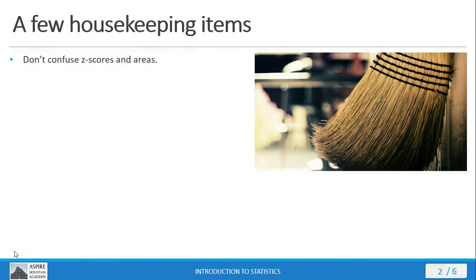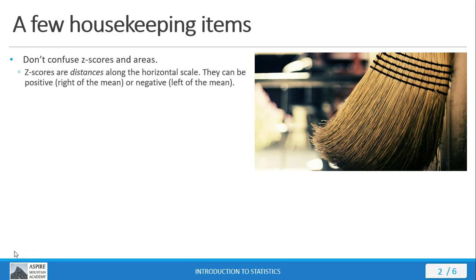There are some students who continue to confuse z-scores and areas. We've talked about this distinction in previous mini-lectures, but it's so important that we not confuse these two that I want to talk about them once more. The z-score is the distance along the horizontal scale — the number of standard deviations a given value is from the mean. Z-scores can be positive, meaning they're on the right side of the mean, or negative, meaning they're on the left side.